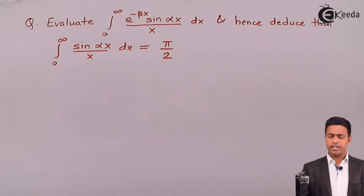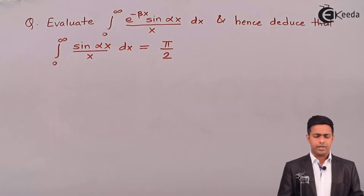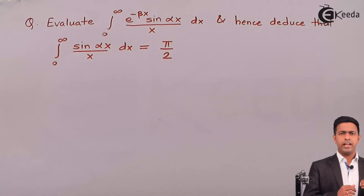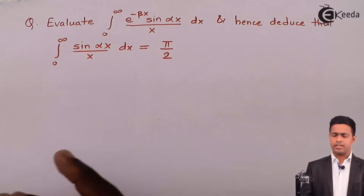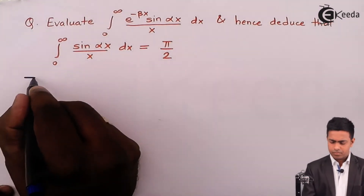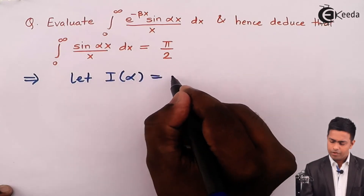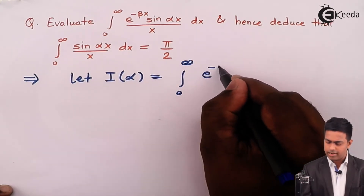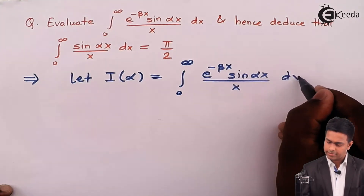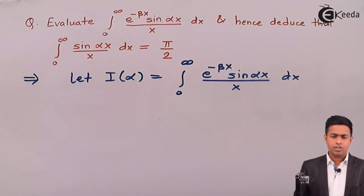Now, if you see carefully, here we have two parameters alpha and beta. Whenever we have two parameters and we want to apply DUIS, the rule says to take any one parameter for the integration. So here I can consider this integral as I of alpha or I of beta. Let's define it as I of alpha, which is the integration from 0 to infinity of e raised to minus beta x times sin(alpha x) upon x dx.